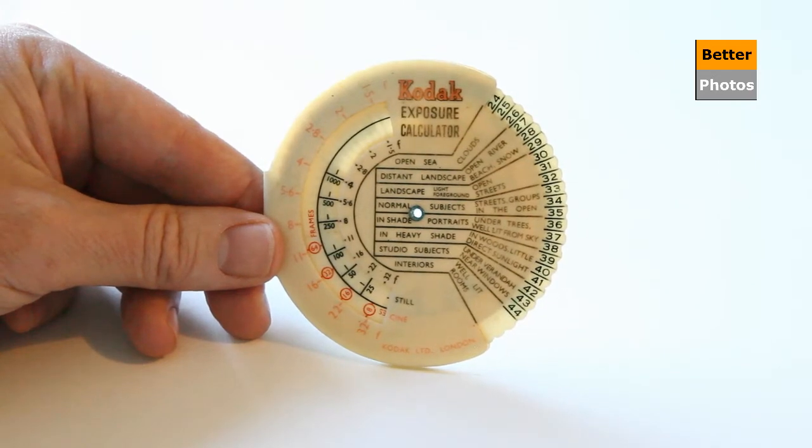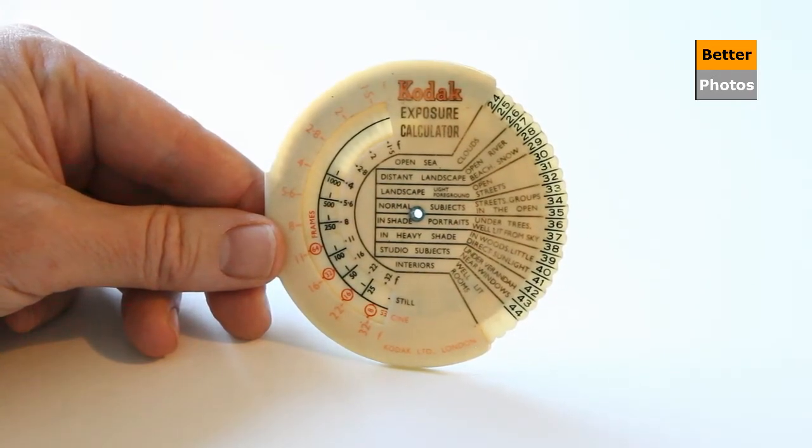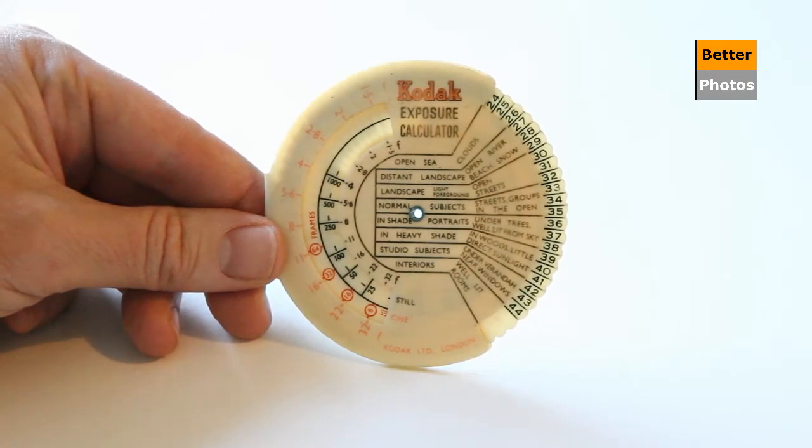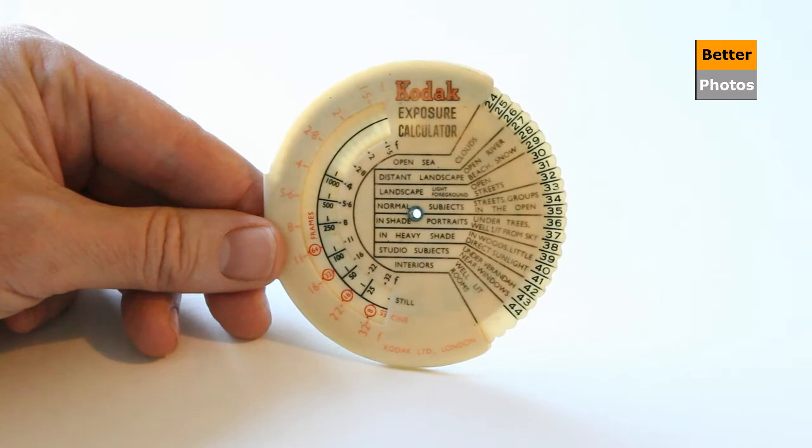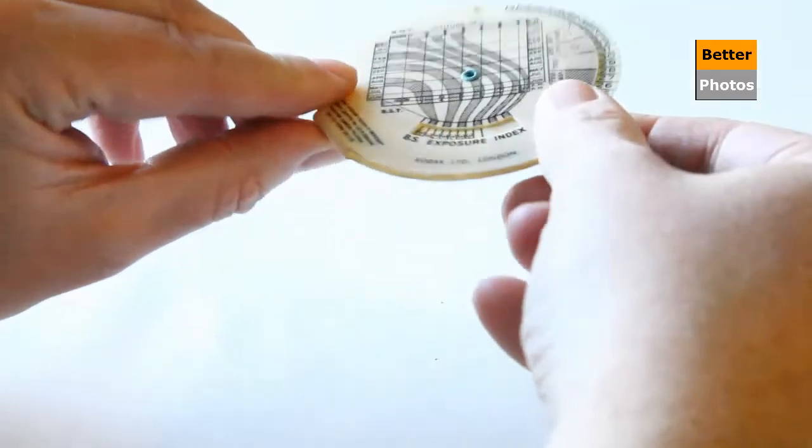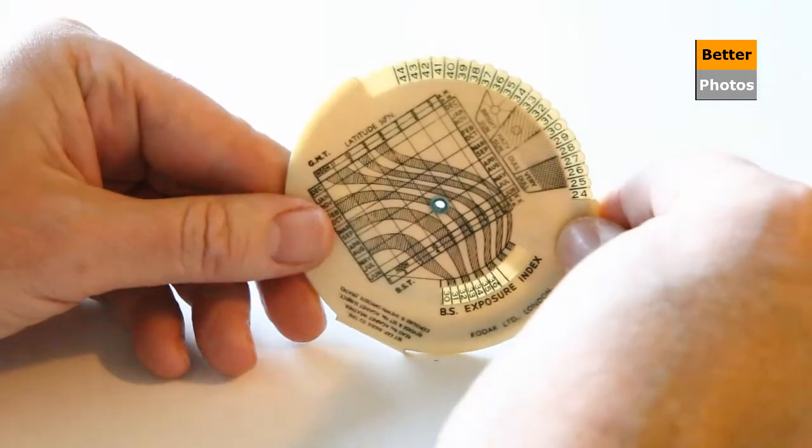So this little gadget was used to do that and if I can just give you a little walk through, a little demonstration of how it's used. The starting point is to know first of all what film speed you're using and the start point for this is we turn this over and dial in that film speed.